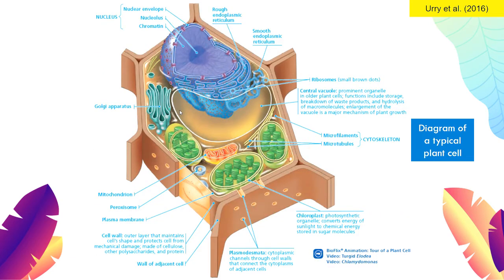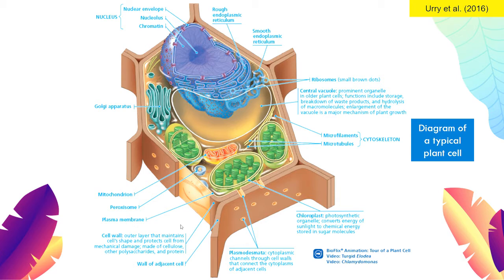This is a diagram of a typical plant cell. It also has the majority of the organelles we've seen in the animal cell. A very prominent organelle in plant cells is the central vacuole, used for storage — sometimes water, sometimes food. Chloroplasts are the organelles in charge of photosynthesis. Mitochondria are also found in plant cells for energy production. Another feature in plant cells not found in animal cells is the cell wall — an outer layer that maintains the shape of the plant cell, usually made up of cellulose.